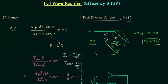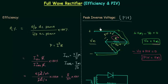Now using Kirchhoff's voltage law in the other loop to obtain PIV: minus Vm plus PIV equals 0, so peak inverse voltage equals Vm. Peak inverse voltage must be greater than or equal to the maximum applied voltage, so PIV must be greater than or equal to Vm for the bridge rectifier circuit.